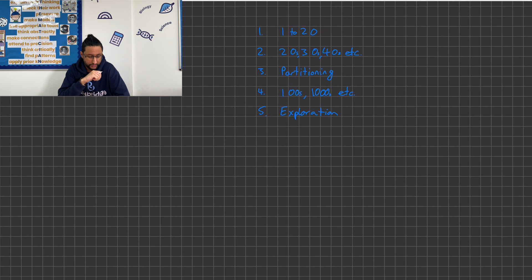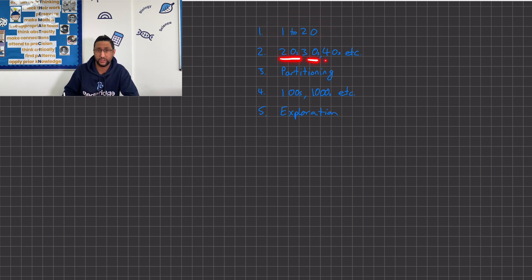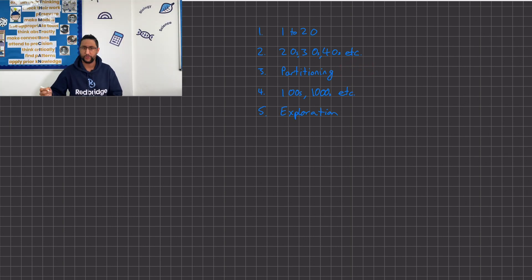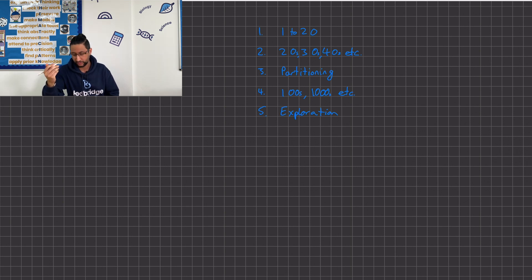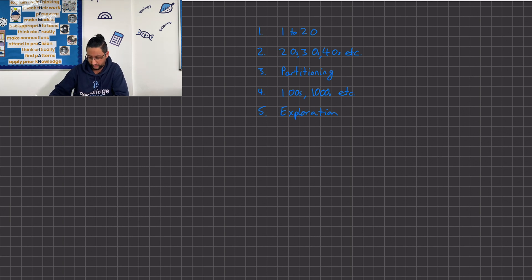Today we're going to be looking at how to write numbers as words. We'll start by looking at the numbers 1 to 20, then move on to 20, 30, 40, 50, up to 100. We'll look at how to partition — you can see our previous video for that — and then we'll move on to hundreds, thousands, and even millions.